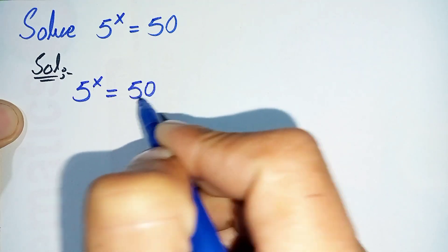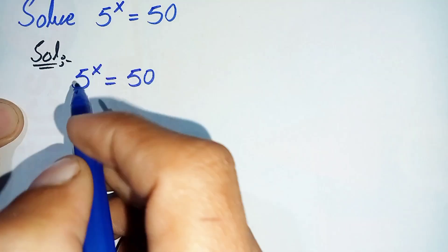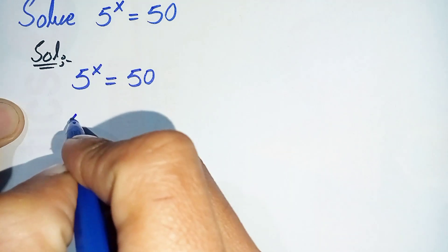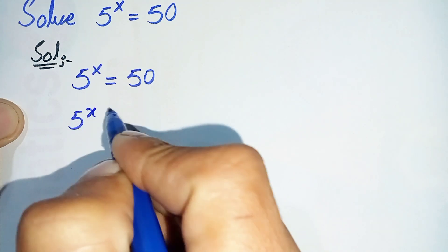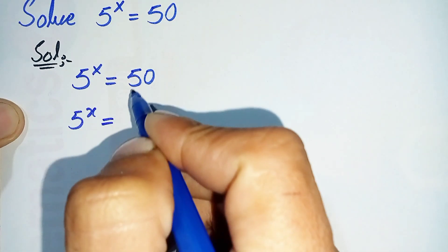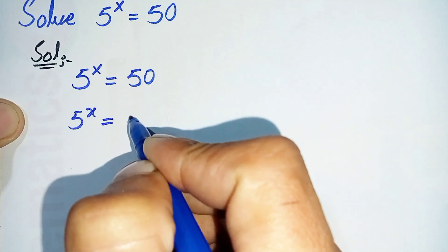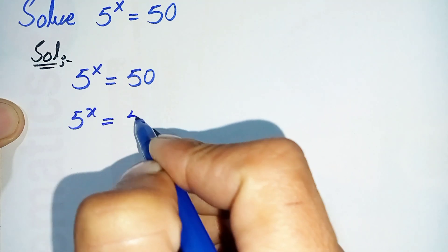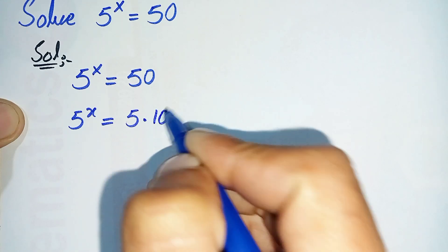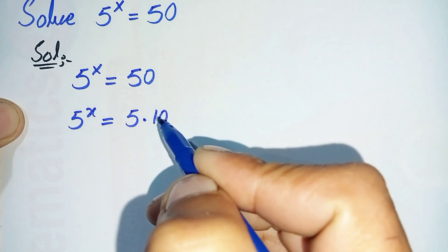In the next step we will keep the left hand side as 5 raised to power x is equal to, and we can write 50 as 5 times 10, since 5 times 10 is 50.